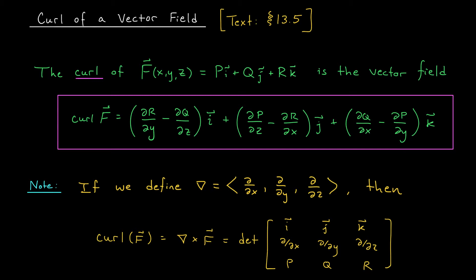Well today we're going to start. It turns out there are a couple of important derivative operations that one can perform on a vector field f, and those will reveal certain physical properties of the vector field. The first derivative-like object we're going to discuss is called the curl of a vector field f. We define this for vector fields in R3, so they have three components p, q, and r, and it's itself another vector field.